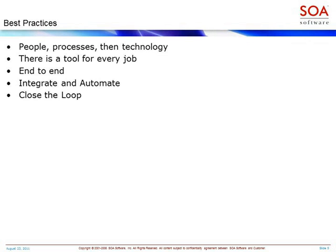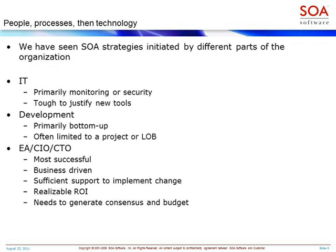The third best practice is end-to-end — looking at the entire life cycle. Then I'll also talk about integrate and automate: integrating and automating provides return on investment and lower total cost of ownership for a service-oriented architecture. Last but not least, I'll discuss what I call closing the loop, which is essentially how you actually provide a way of enforcing and implementing policies in your environment with the minimal amount of impact. So let's start at the beginning: people, processes, then technology.